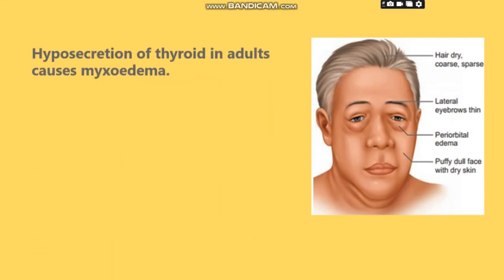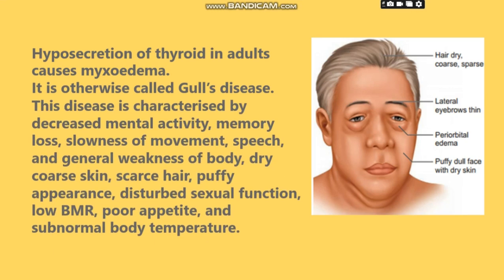Hyposecretion of thyroid in adults causes myxedema. This disease is characterized by decreased mental activity, memory loss, slowness of movement, speech and general weakness of body, dry coarse skin, scarce hair, puffy appearance, disturbed sexual function, low BMR, poor appetite, and subnormal body temperature.